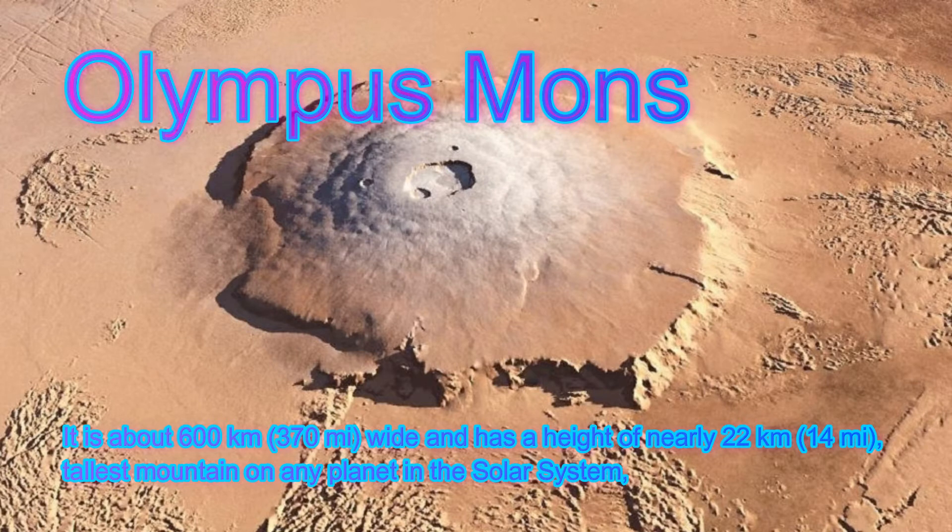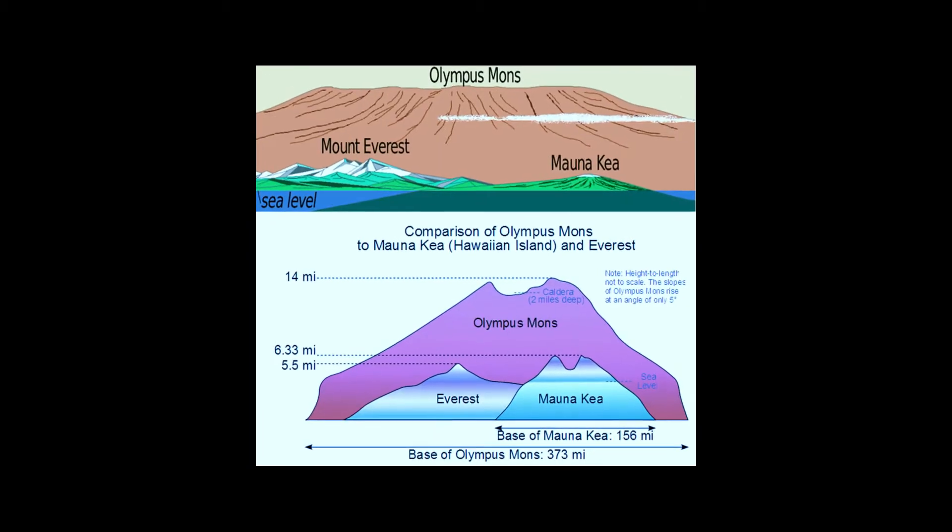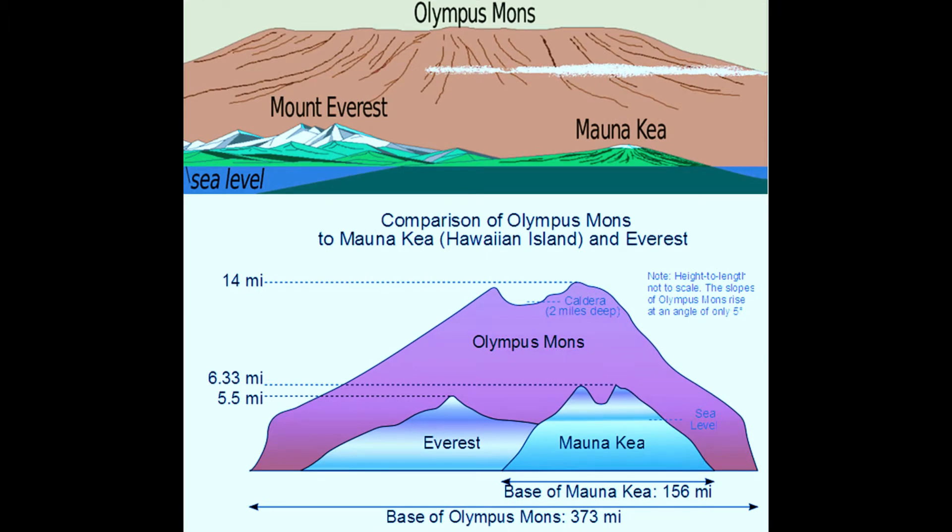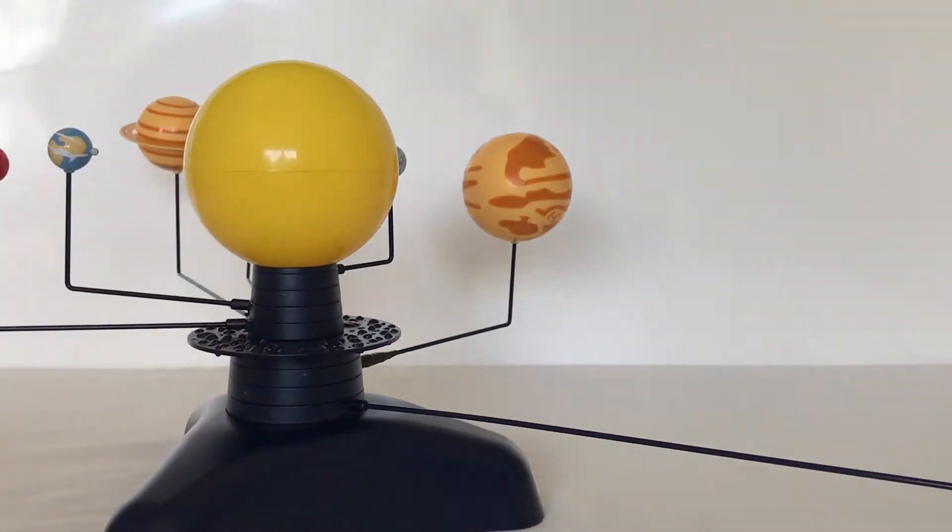Olympus Mons is the highest mountain on Mars. And now we have the biggest planet, as you can see.